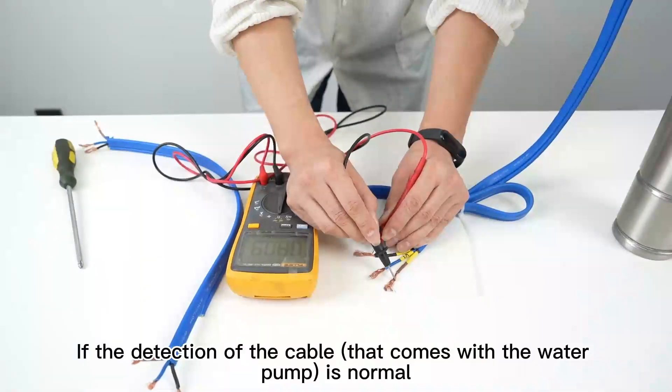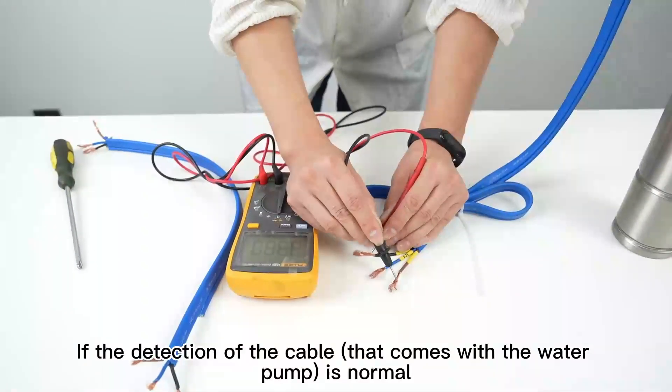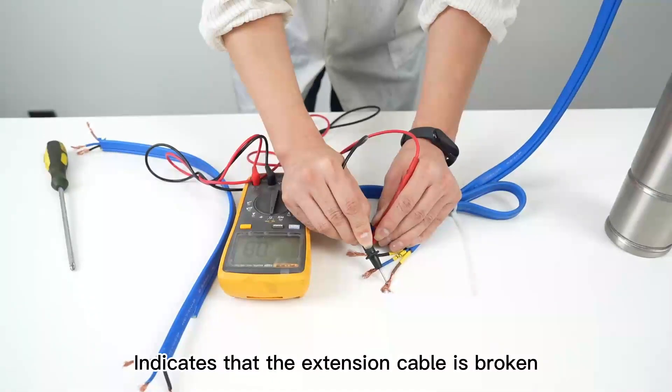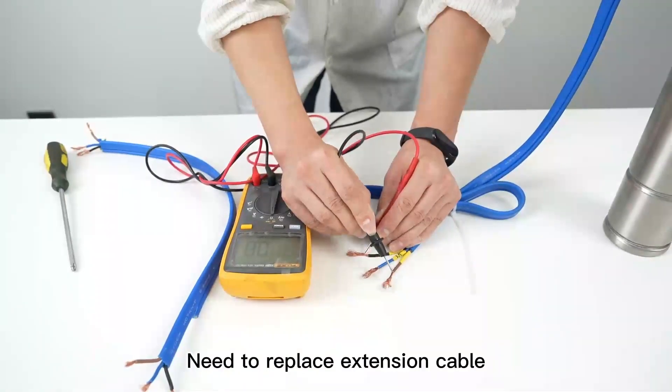If the detection of the cable that comes with the water pump is normal, this indicates that the extension cable is broken. You need to replace the extension cable.